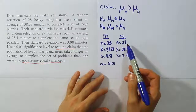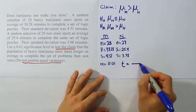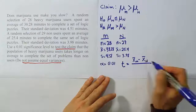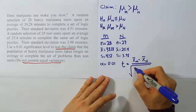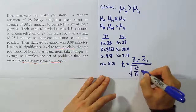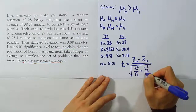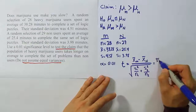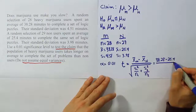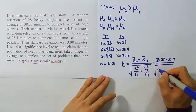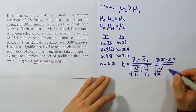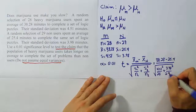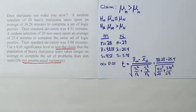The sample sizes are small, so we'll use a t-test statistic formula. The structure is: x̄ for the marijuana group minus x̄ for the non-user group, divided by the square root of the standard deviation for the first group squared over its sample size, plus the standard deviation for the second group squared over its sample size. Plugging in: 38.28 minus 25.4, divided by the square root of 4.51² over 28, plus 3.98² over 29.